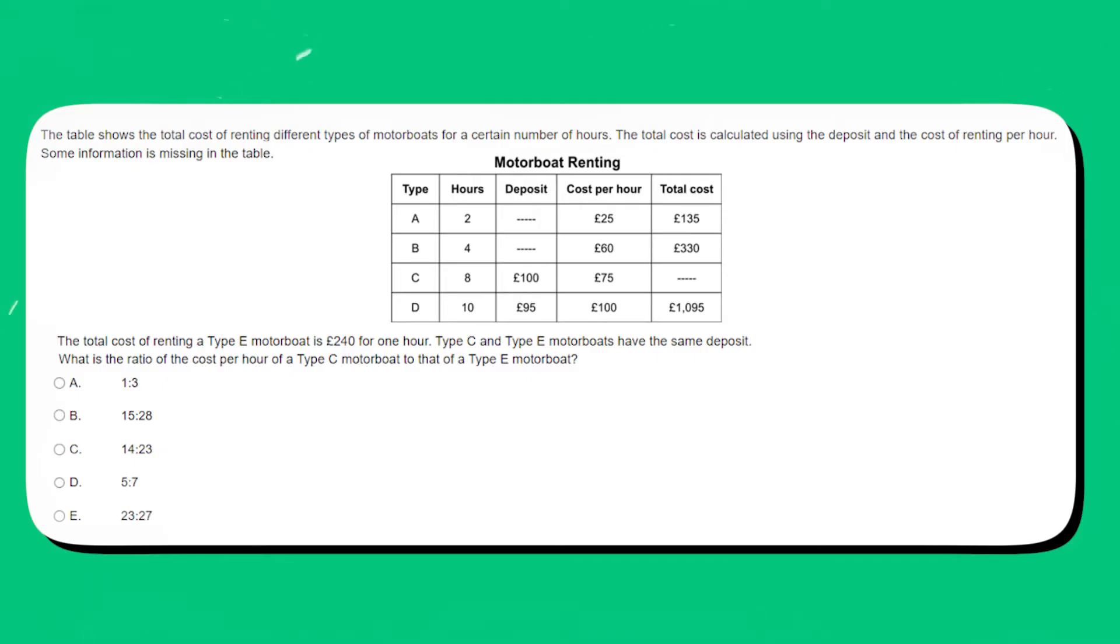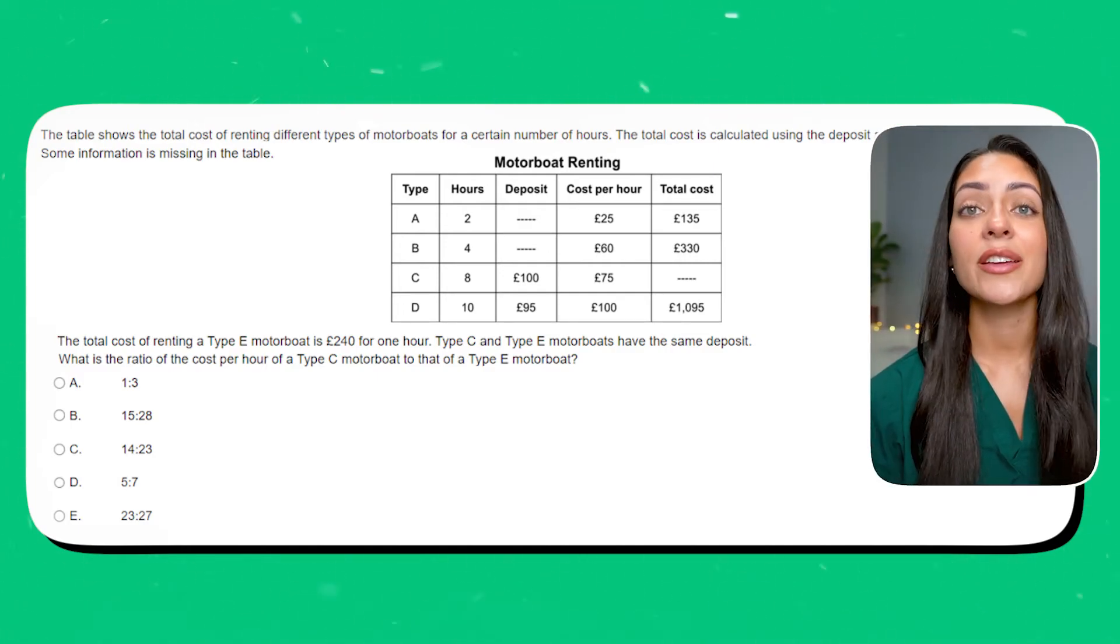Let's take a look at a ratio example. The table shows the total cost of renting different types of motorboats for a certain number of hours. The total cost is calculated using the deposit and the cost of renting per hour. Some information is missing in the table. The total cost of renting a type E motorboat is £240 for one hour. Type C and type E motorboats have the same deposit. What is the ratio of the cost per hour of a type C motorboat to that of a type E motorboat? Is it A: 1 to 3, B: 15 to 28, C: 14 to 23, D: 5 to 7, or E: 23 to 27? Take some time here to try and calculate it yourself.